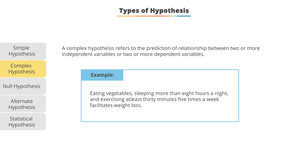...and exercising at least 30 minutes five times a week reduces weight loss. And now you have a multivariate analysis or a complex hypothesis because all of these independent variables could affect weight loss, a dependent variable. But it also could affect multiple dependent variables, so not just weight loss but reduce blood pressure as well as weight loss.